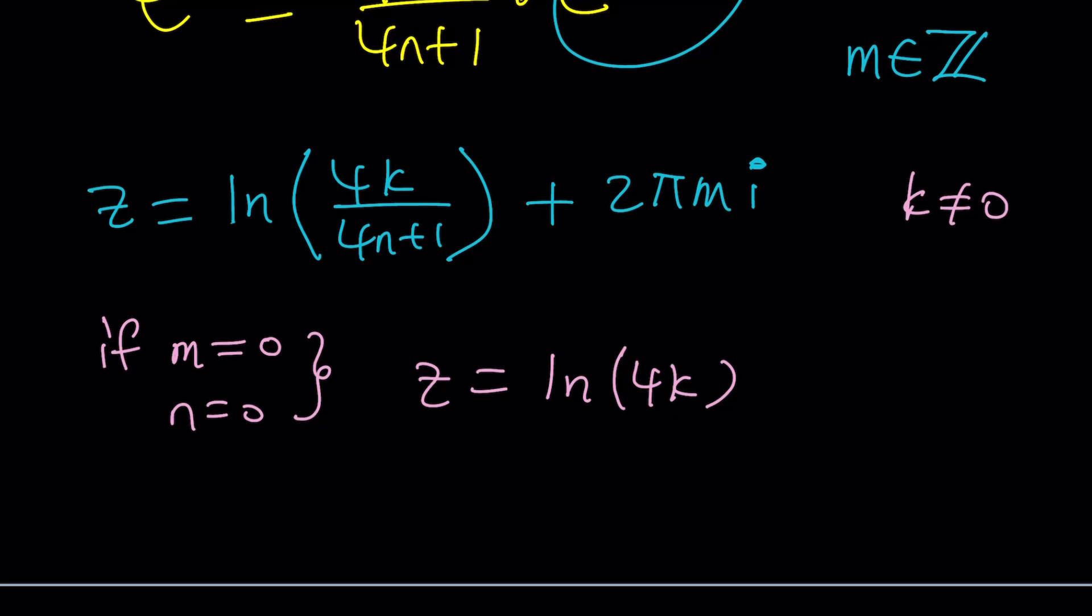Now here's the thing: if z is ln 4k, let's go back to the original. E to the z, if z is ln 4k, e to the z is just going to be 4k, right?